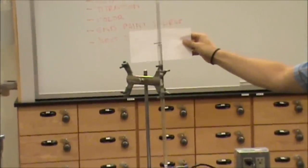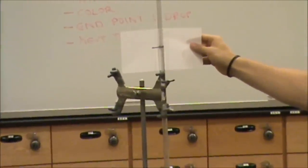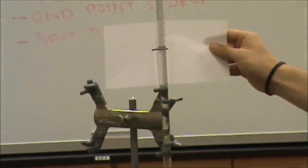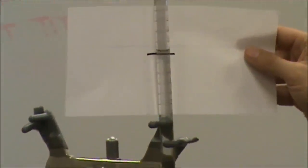I am once again going to use the piece of paper with the black line to measure from the bottom of the meniscus. We want to record this volume to two decimal places. And I believe we are at 13.95 milliliters.